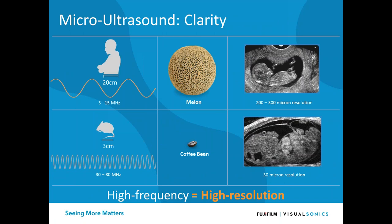With Fujifilm VisualSonics, we deal with micro-ultrasound, or ultra-high frequency ultrasound. In the clinic, frequencies of 3 to 15 megahertz are used, whereas our frequencies range from about 30 to 80 megahertz. The resolution is remarkable: the top image shows a human fetus — about the size of a melon — and the bottom shows a mouse fetus, about the size of a coffee bean. This ultra-high frequency ultrasound gives us resolution down to about 30 microns.